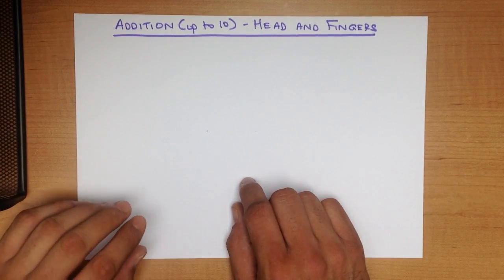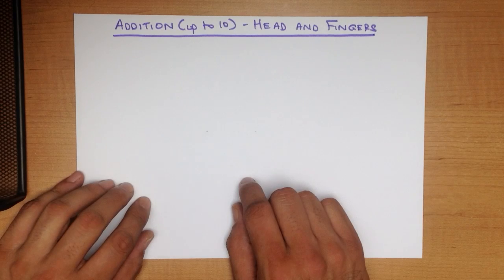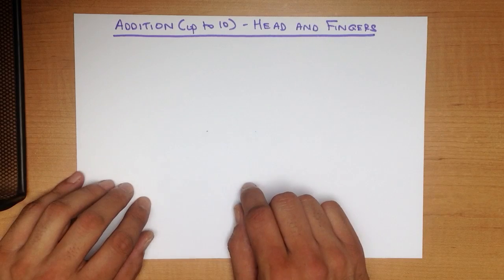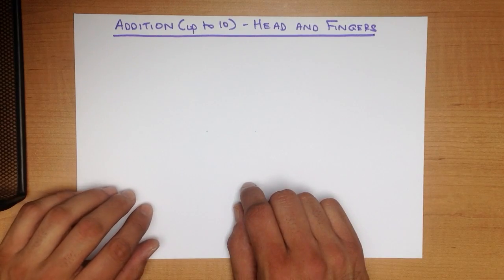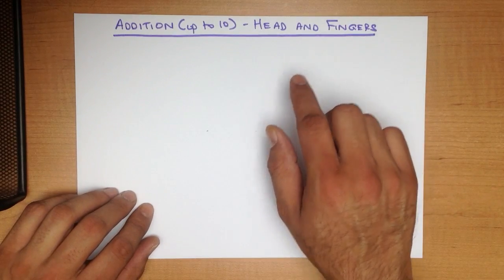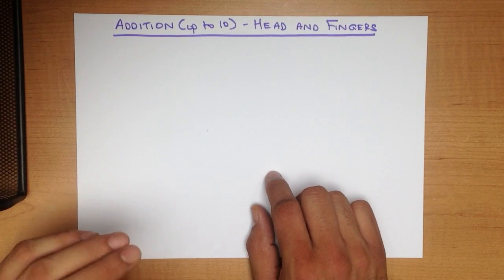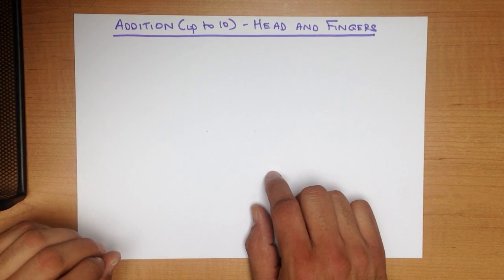This is the third method we are using. The first one was using dots. The second one we use the number line. This one we are going to use head and fingers which is very good for mental arithmetic.